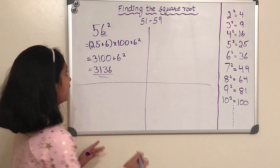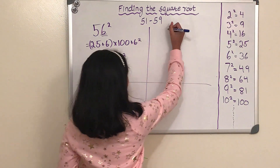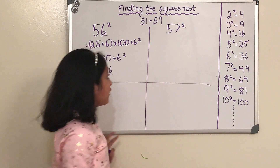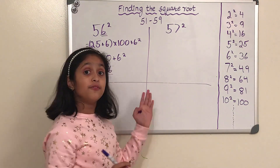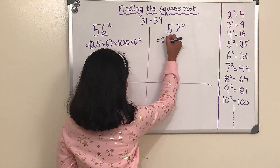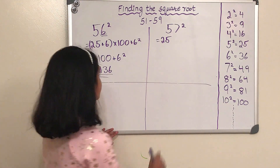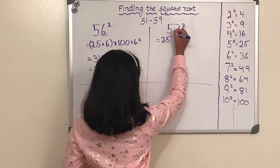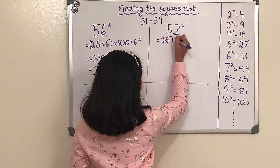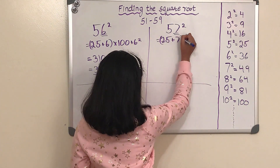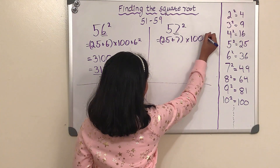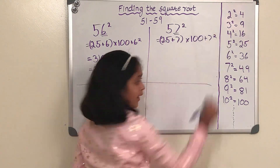How about we do another one? Let's do 57 squared. First step is we have to do 5 squared, which again is 25. Then we have to add the last digit, which is 7. So let's add that. And then multiply that answer by 100. And then add 7 squared.